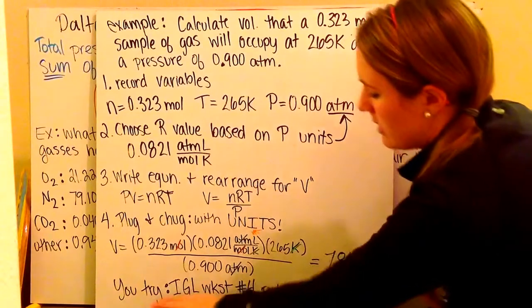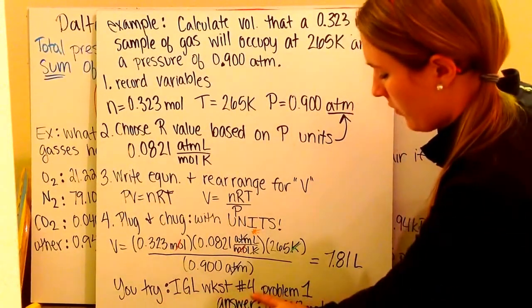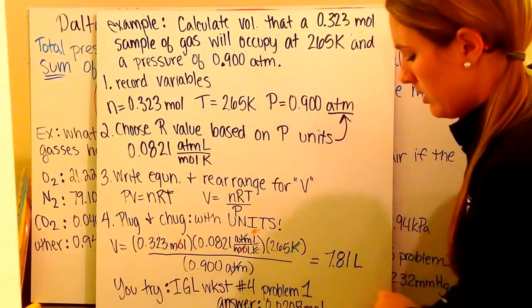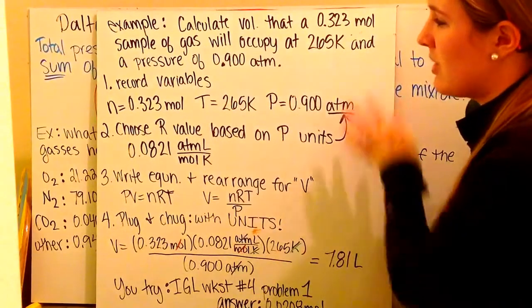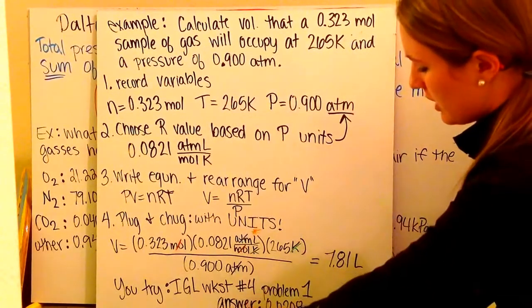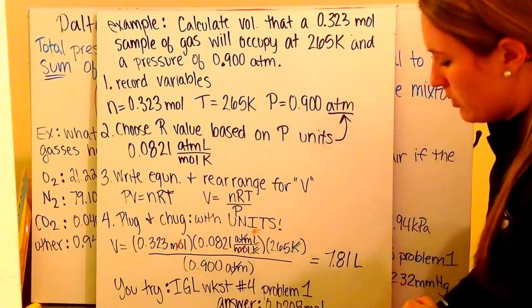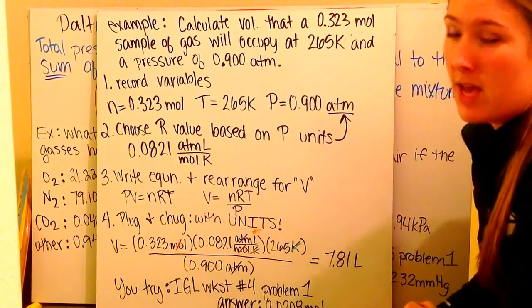Now, go ahead and try your ideal gas law worksheet number four, problem number one. You're going to set it up the same way, following the same steps. And, you should get an answer of 0.0208 moles of gas.